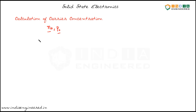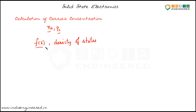What we have so far is the probability of finding an electron in a particular energy level. But this information is not enough to calculate the carrier concentration. We also need to know the density of energy states. We need both these pieces of information to calculate the carrier concentration — the probability of finding an electron in an available state and the density of states in that particular available range.